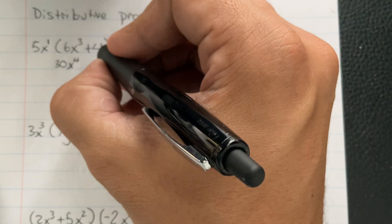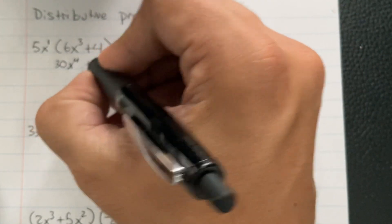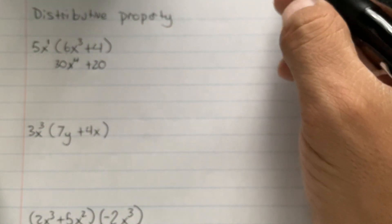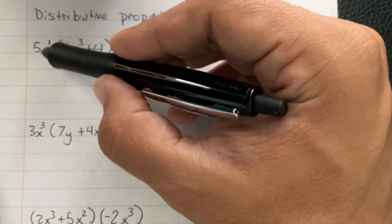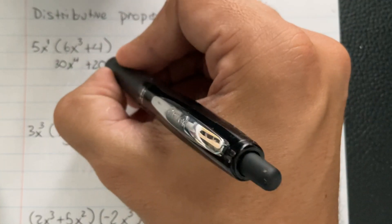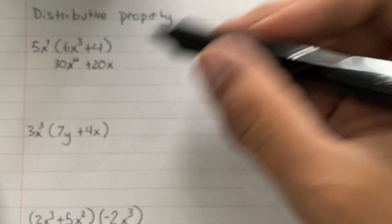Then 5 times a positive 4, that's going to be a positive 20. And now x¹, and there's nothing there. So it's just going to end up being x¹, which is written like that.